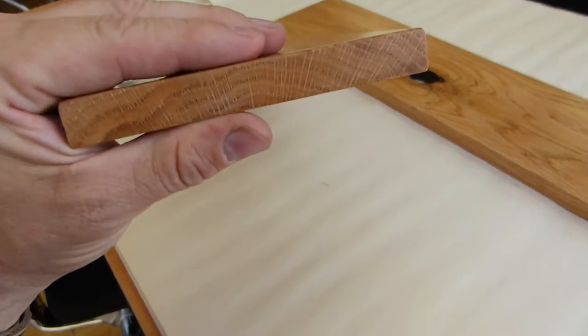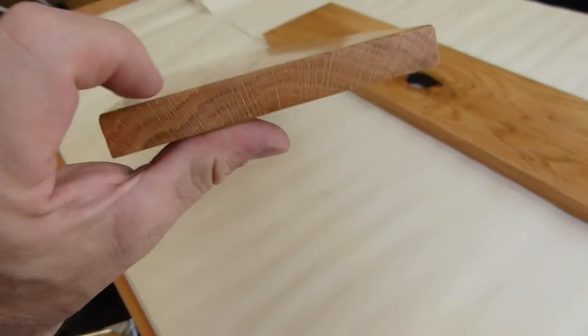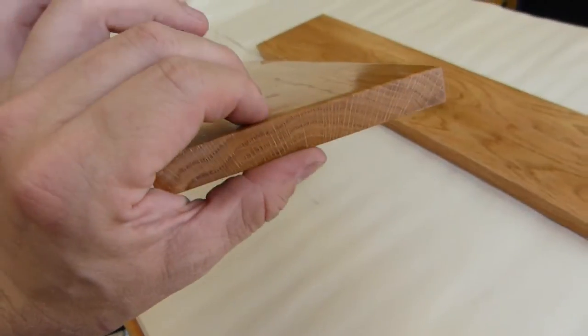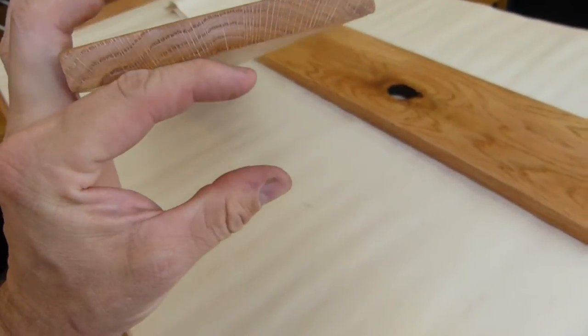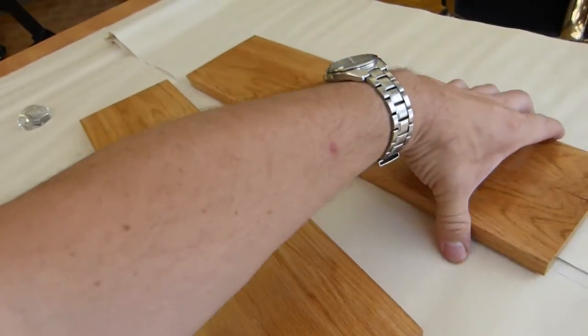You can see it on the end grain that the growth rings in the wood go in concentric circles and the center of the tree was somewhere here, the pith of the tree. Same on this board.